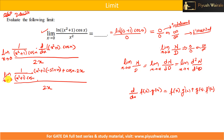If you directly put the limit value here: (0 + 1)·(−sin(0)) = 1·0 = 0, and cos(0)·2(0) = 0, so the numerator is 0 again and the denominator is 0 again. We got the 0/0 form once more, so we need to apply L'Hôpital's rule again — or try to simplify the expression first.